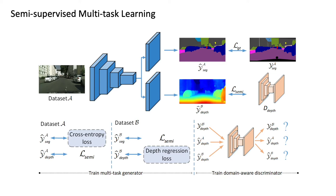With this formulation, our model is able to optimize all the task-specific parameters simultaneously with supervisions either from the supervised loss or the semi-supervised one on unlabeled data. Therefore, the shared parameters can also update with gradients accumulated from the supervision of all tasks on both labeled and unlabeled data, which avoids bias only on labeled data.